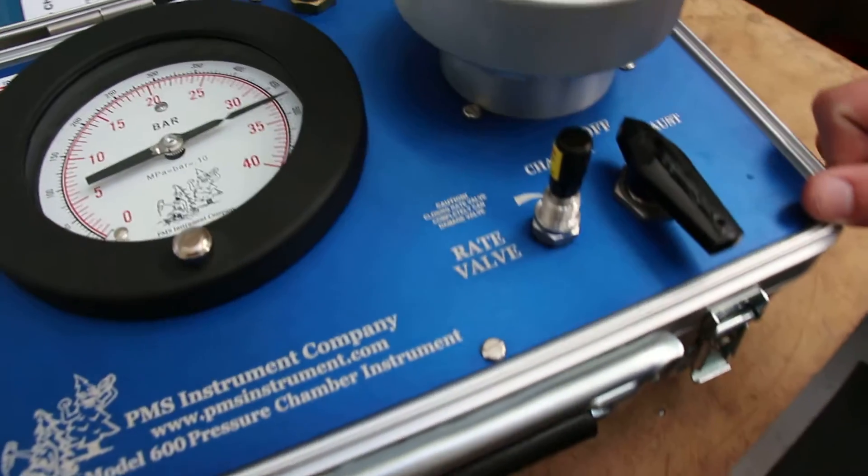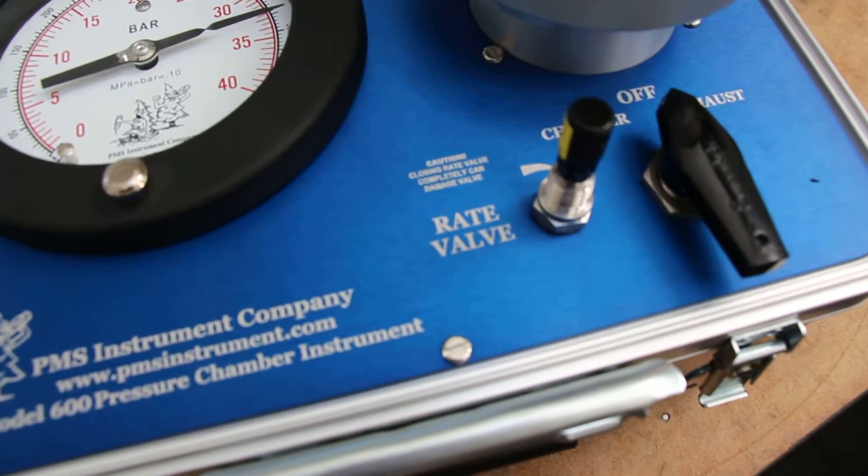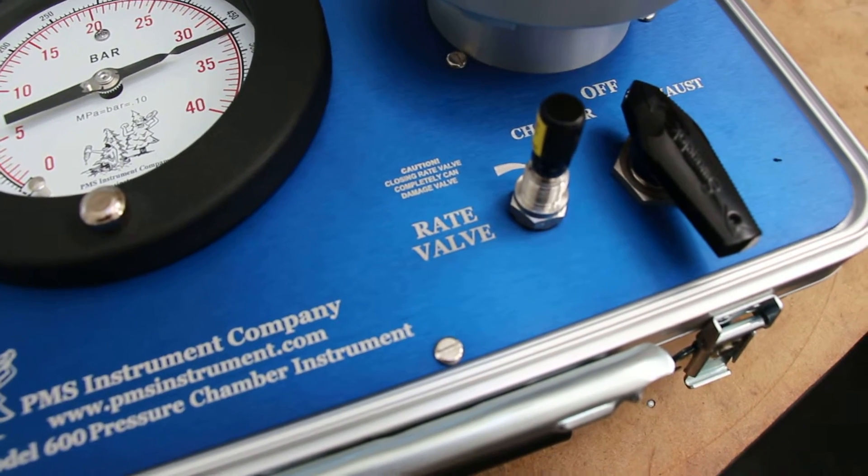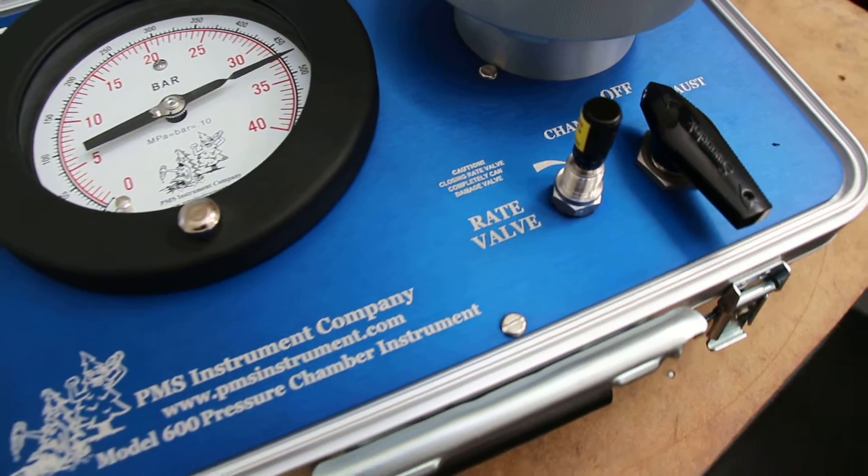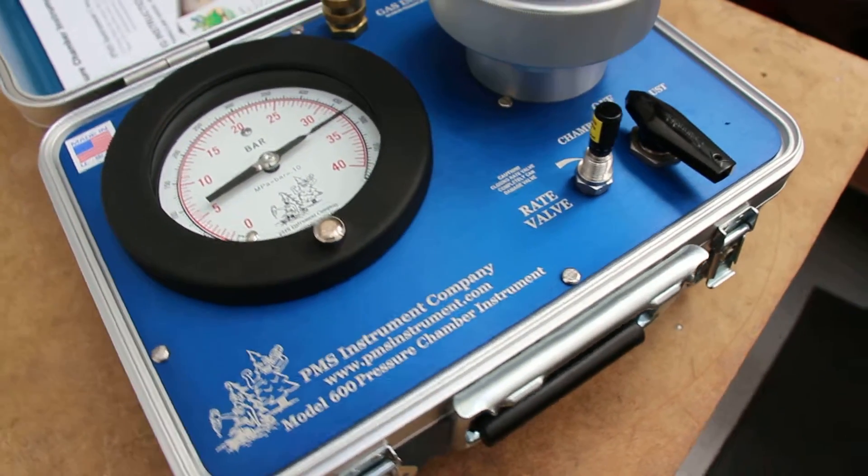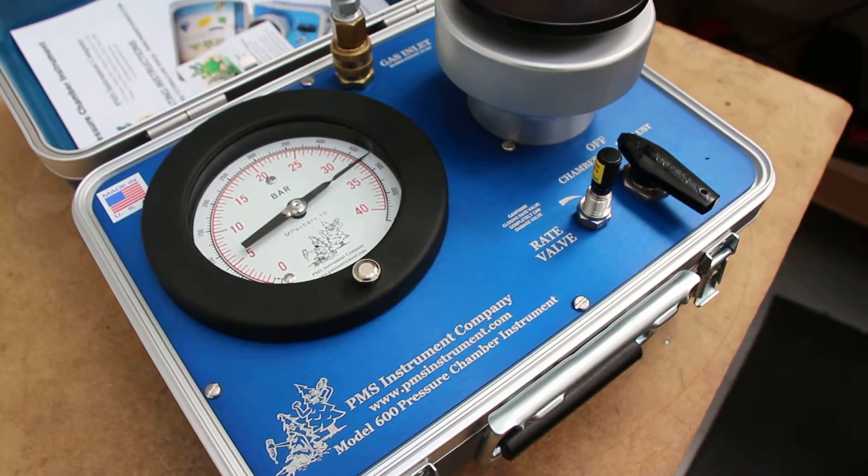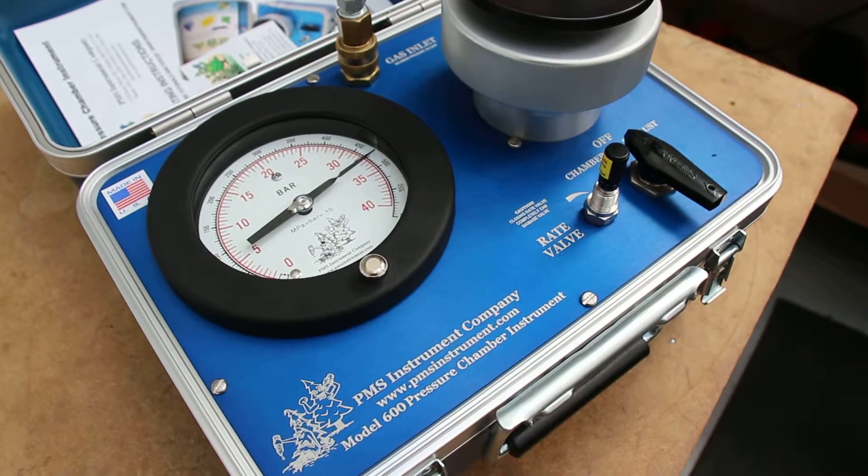Care should be taken when using the rate valve that you do not over-tighten it and run the needle down into the packing, as this could damage the rate valve. For more information about using a pressure chamber or techniques, contact our website at PMS Instrument dot com.